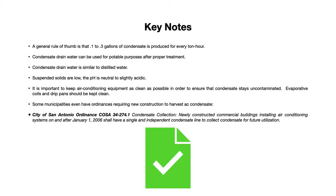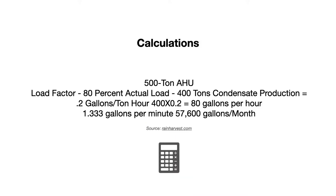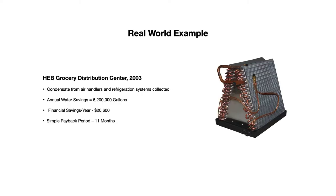After January 1st, 2006, newly constructed commercial buildings shall have a single and independent condensate line to collect condensate for future utilization. A real-world example is the HEB grocery distribution center — this information was from 2003. They collected condensate from air handlers and refrigeration systems throughout their facility. Their annual water savings was over 6 million gallons, the financial savings per year was over $20,000, and the simple payback period was just shy of one year at 11 months.